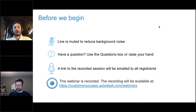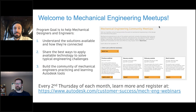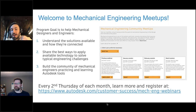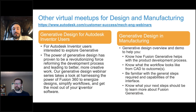A quick reminder about mechanical engineering meetups: the concept is to run webinars on a regular cadence, every second Thursday of each month. You can register three sessions ahead. Today we're in January; the next session in February will be about factory design, and the March session will focus on product simulation. We also cover extra topics in other series about generative design.